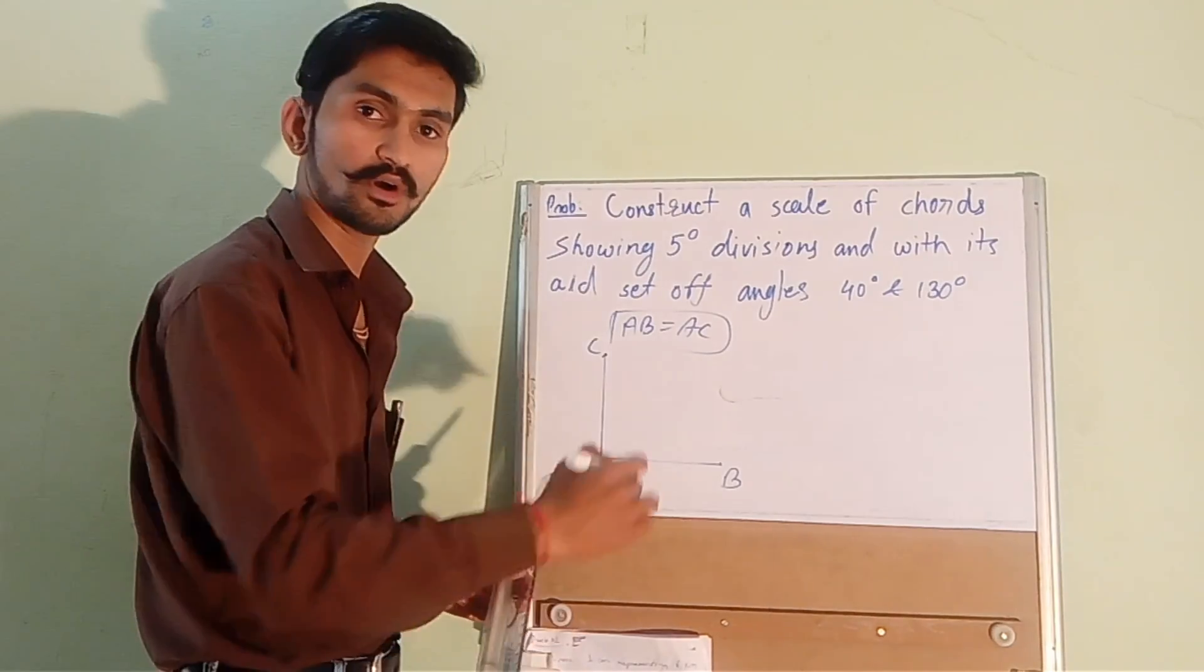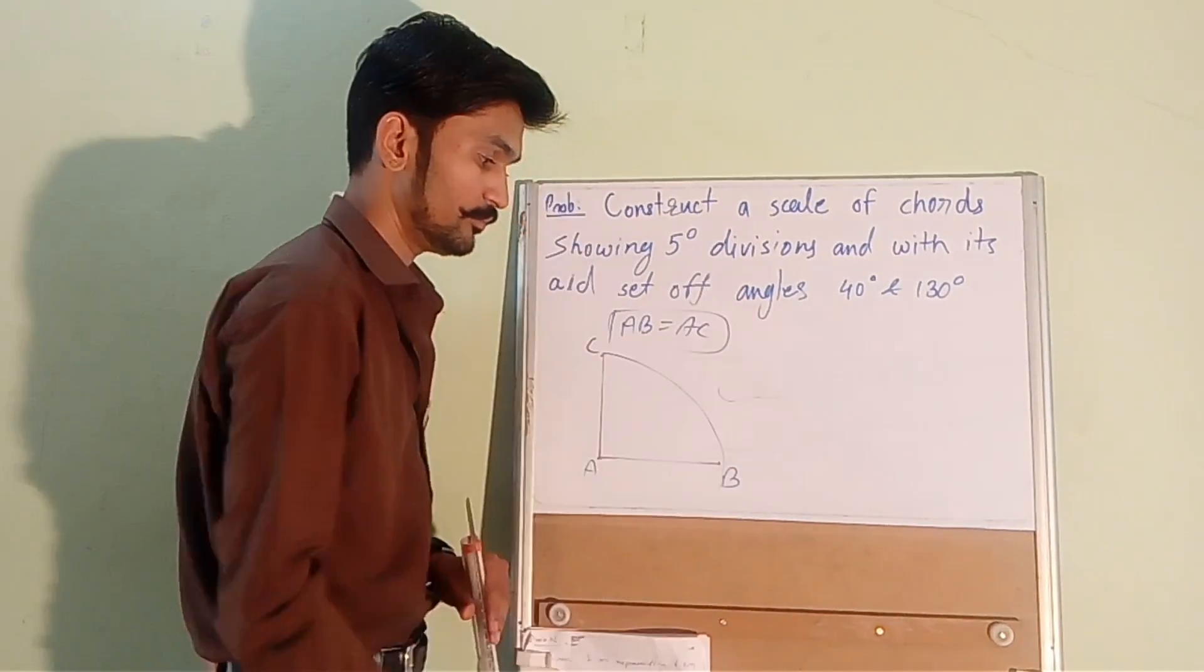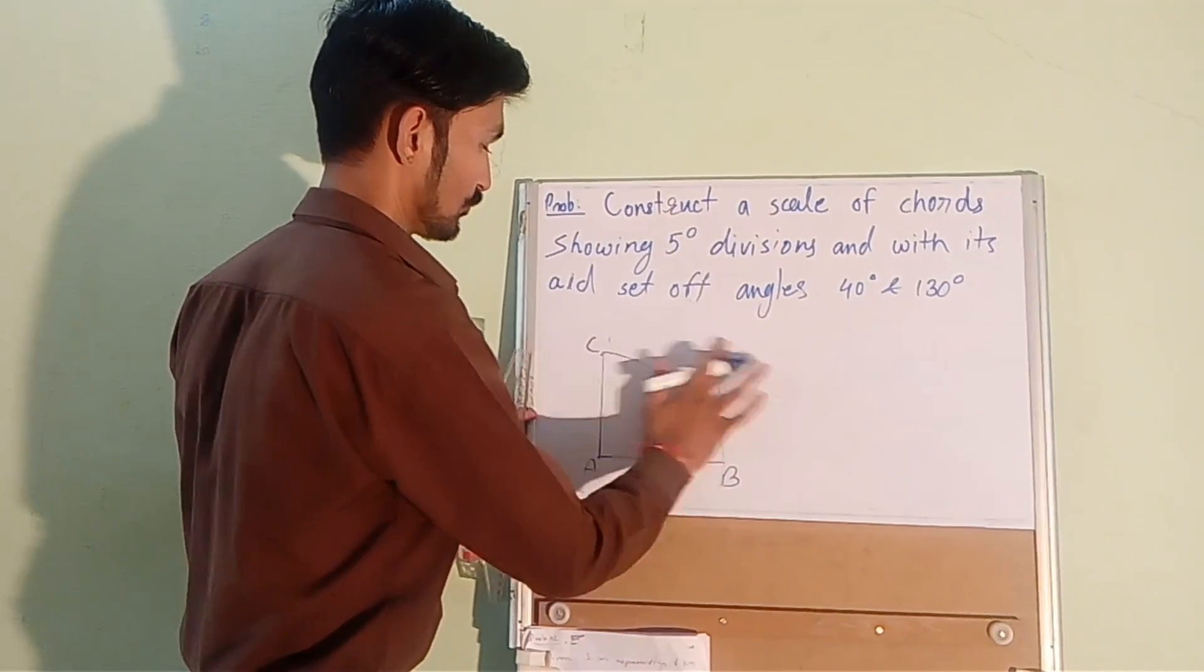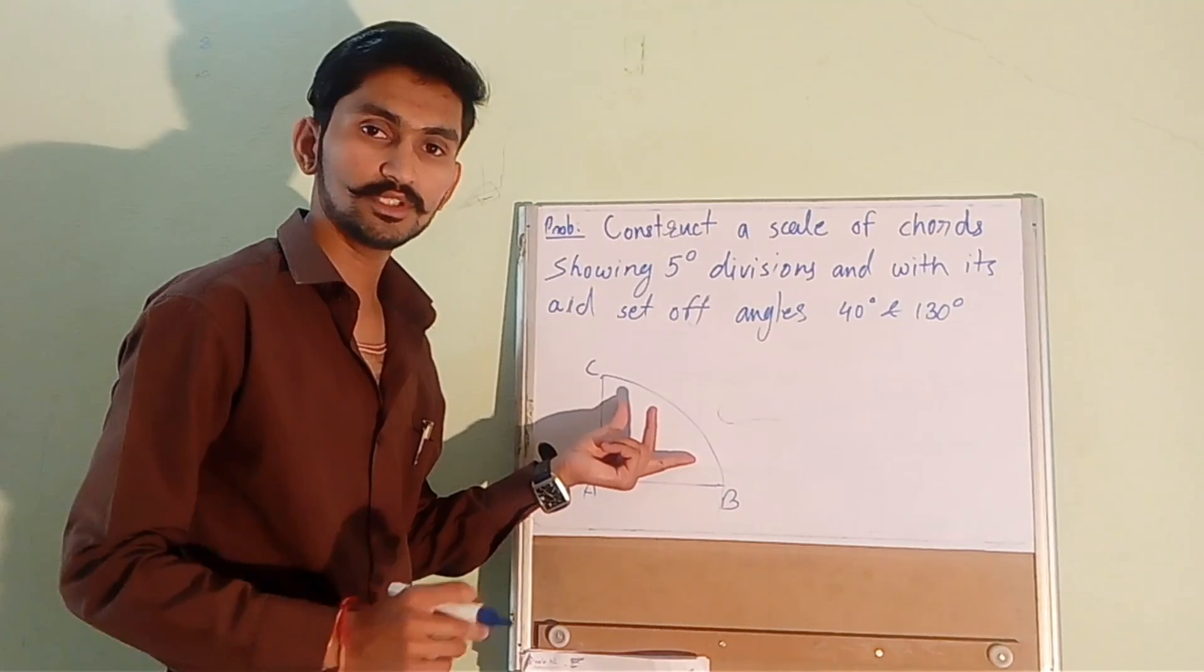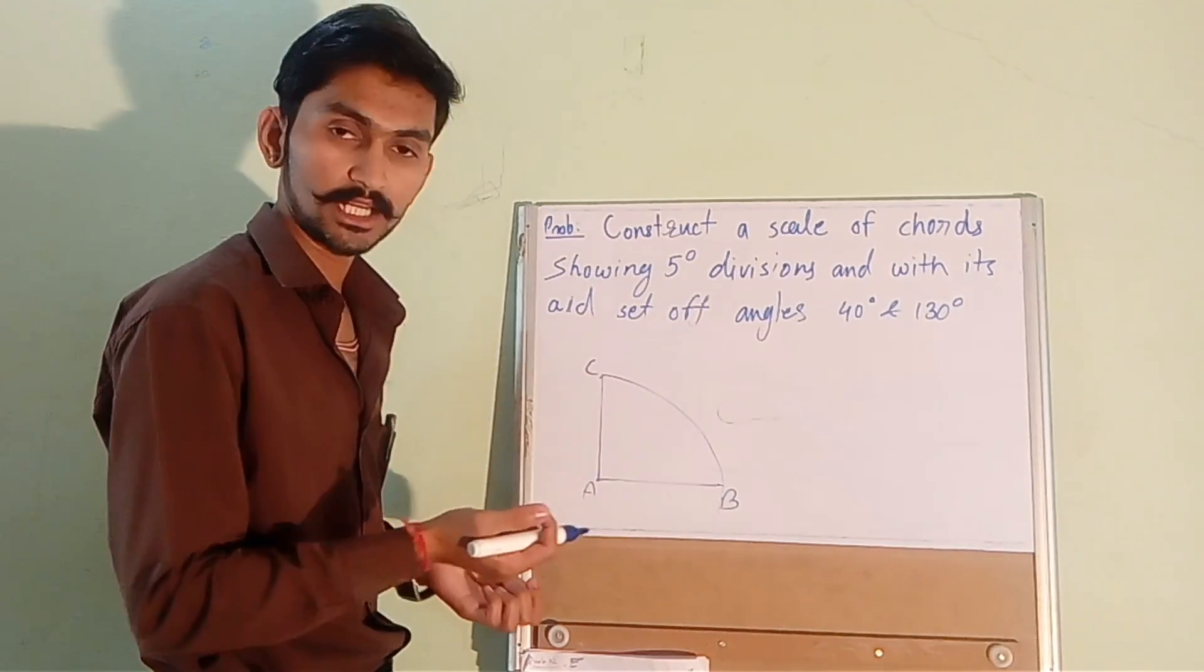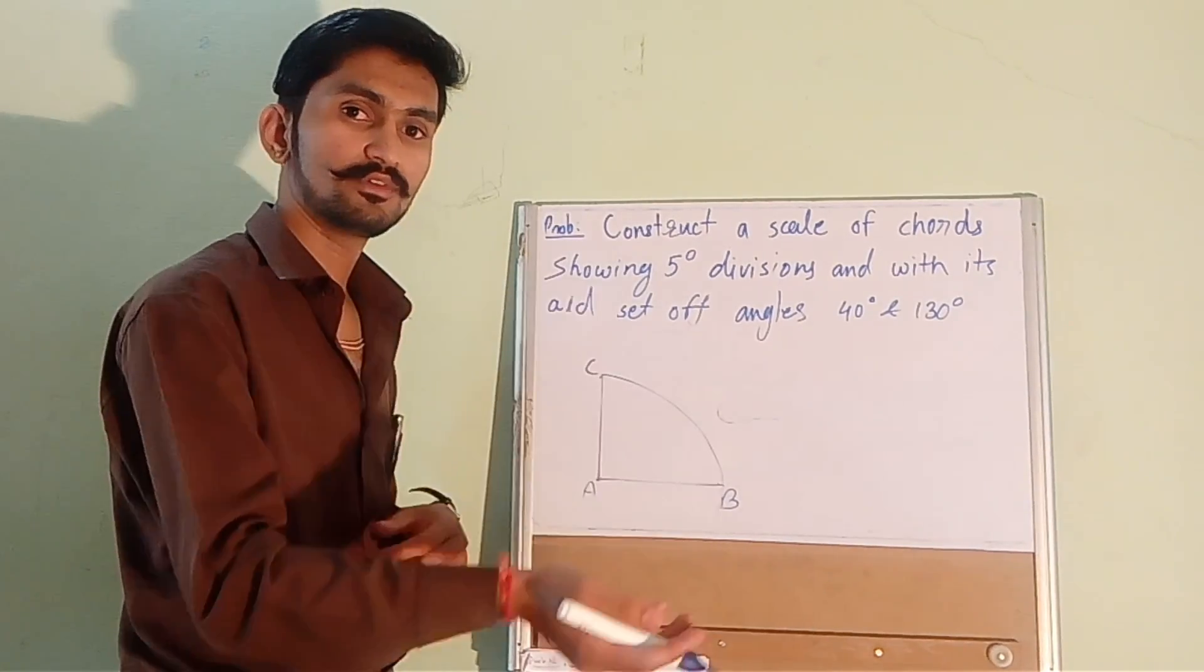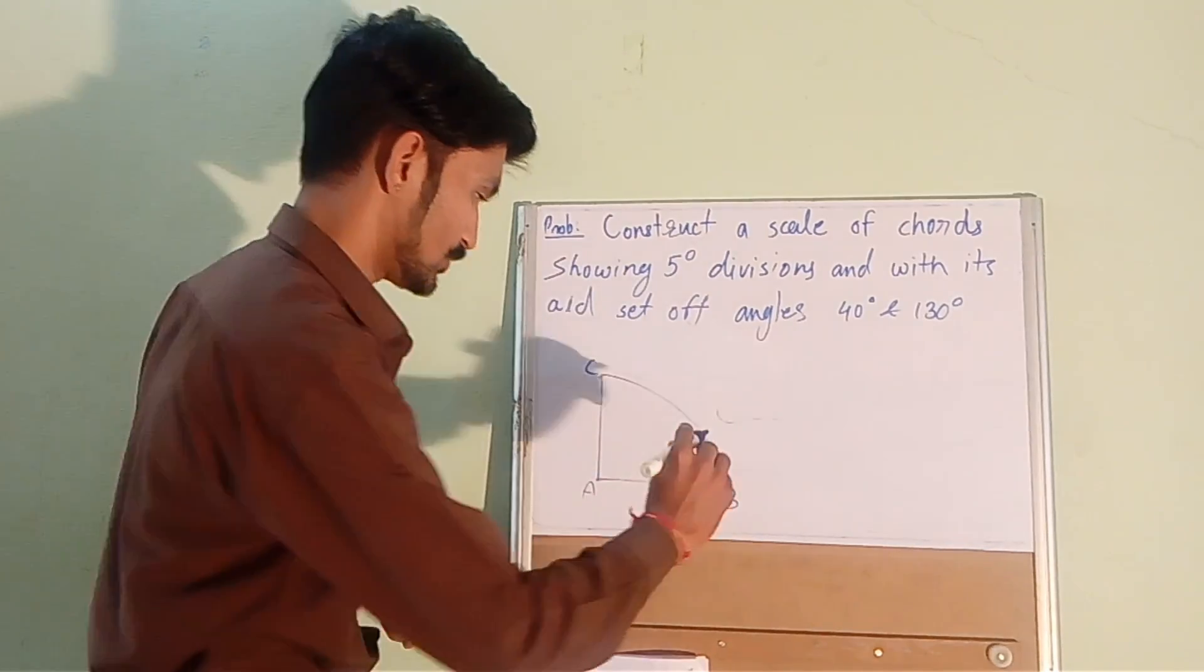Now draw an arc joining B and C. So this is arc BC. Now divide this arc into nine equal parts using trial and error method. First we will be dividing this arc into three equal parts and then further we will be subdividing these three parts into nine equal parts.